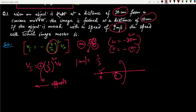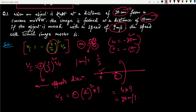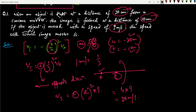If you understand this, you can solve very quickly. For example, if a question says the image formed is double the size of the object, then the magnification is 2. Velocity of image equals minus 2² times 9, which equals minus 36 meters per second — simple as that. So now let's move on to the second question, where I'll explain a different angle from which you can be asked this type of question.